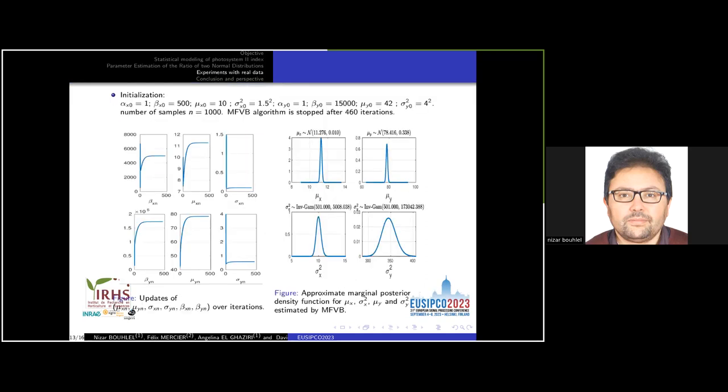We proceed by using the following values for the initialization of the algorithm. The number of samples is equal to 1,000. The mean field variational Bayes algorithm is stopped after 460 iterations.